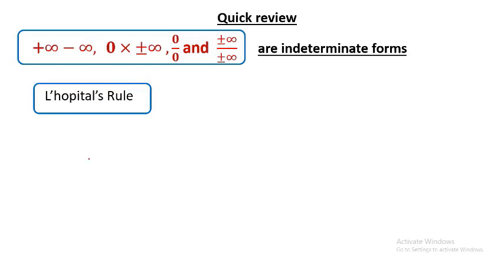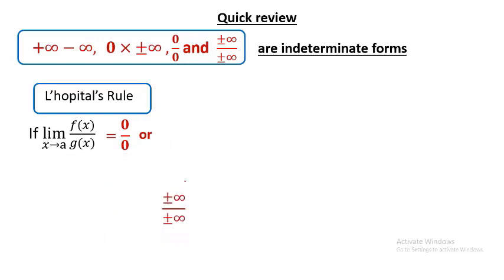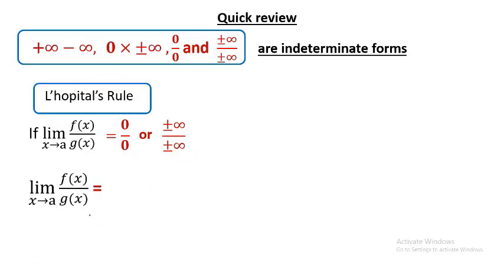Now, what is L'Hôpital's rule? L'Hôpital's rule is a technique to solve a limit. When evaluating the limit of the quotient f(x) over g(x) as x approaches a, if we get 0 over 0, or infinity over infinity, we are able to solve the limit by applying L'Hôpital's rule.